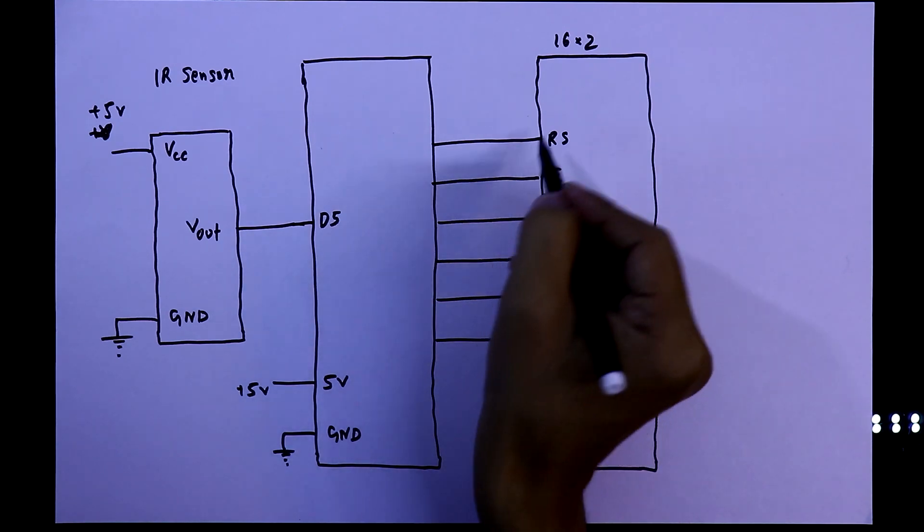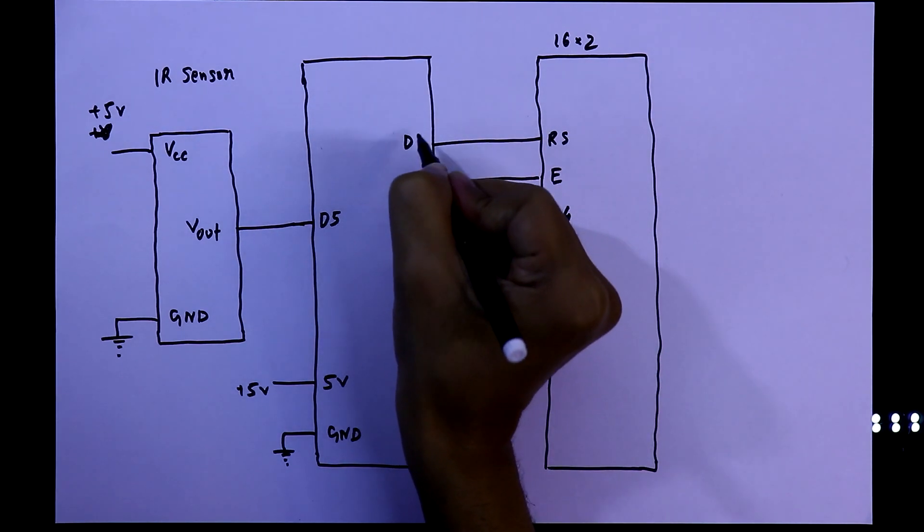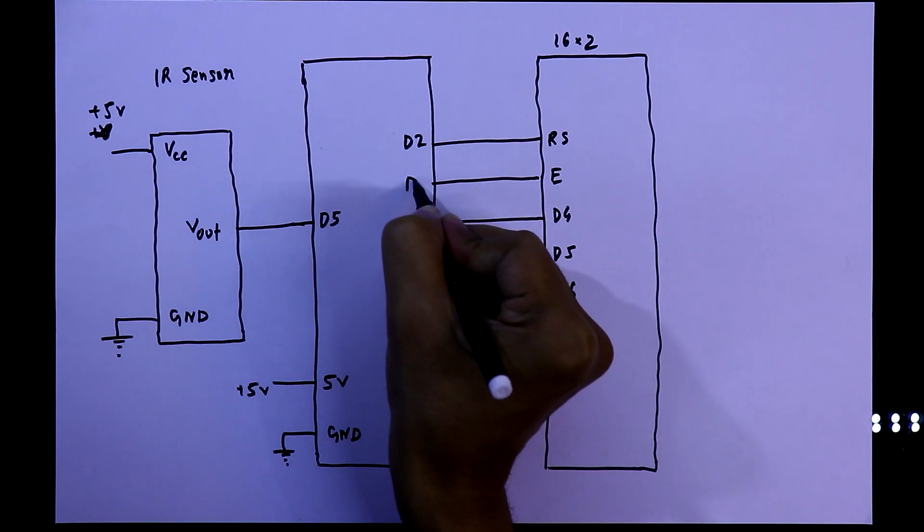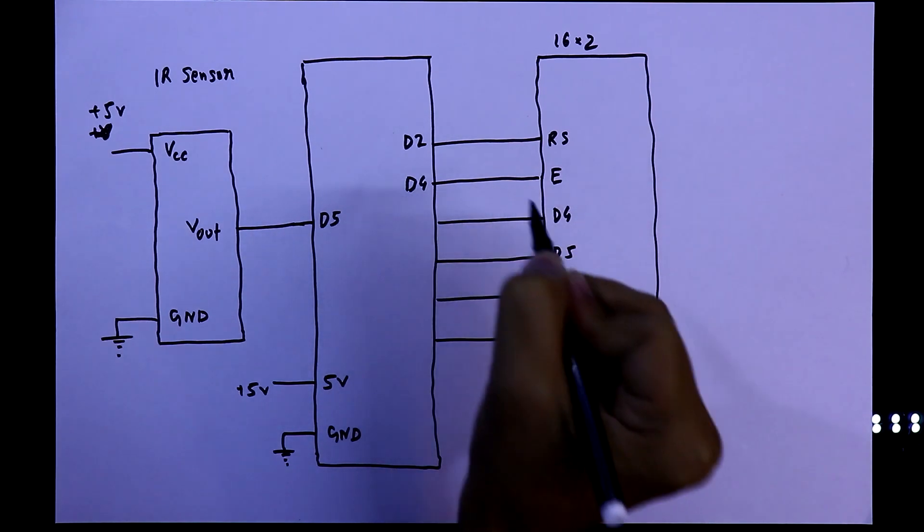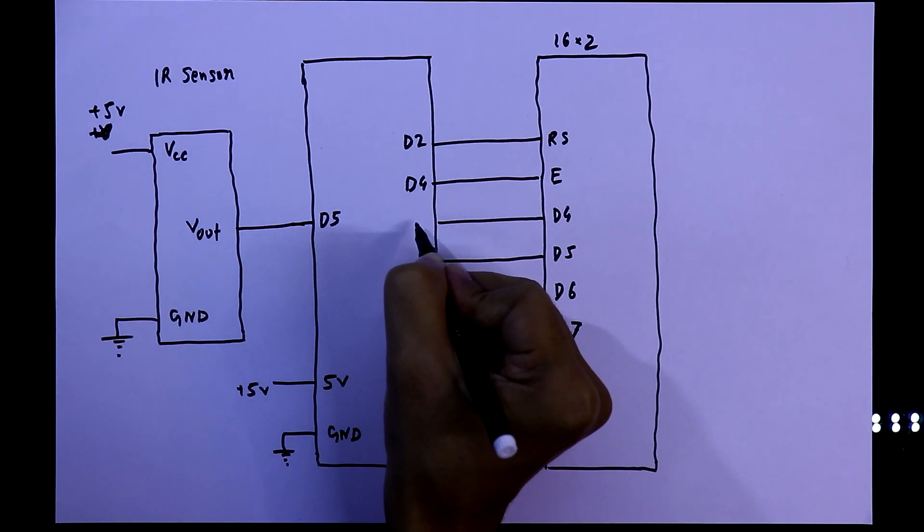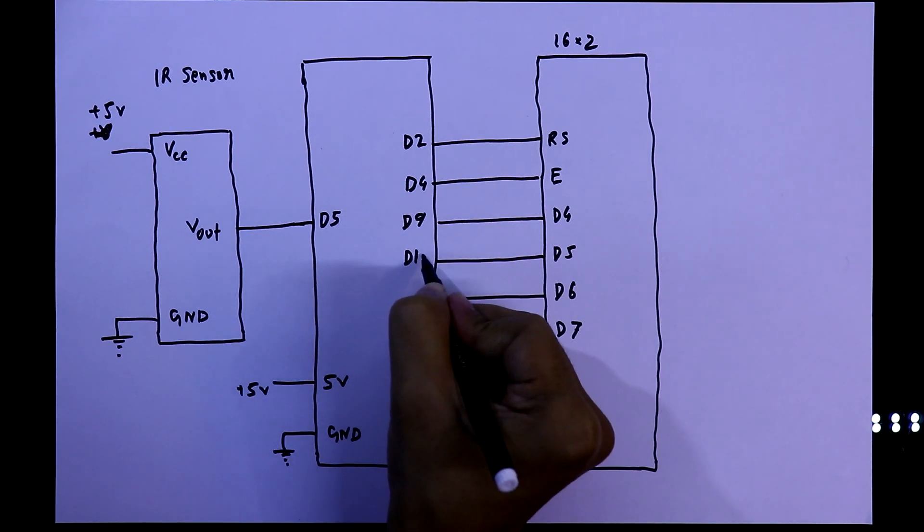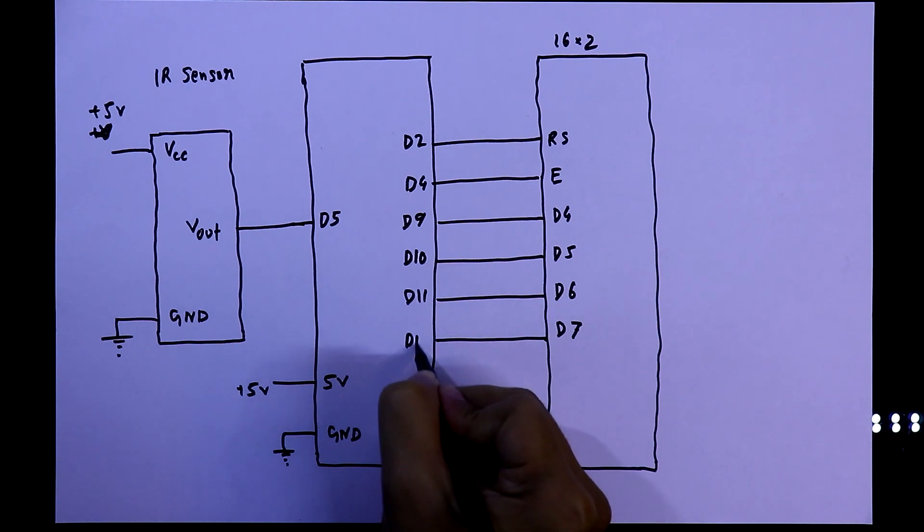According to my program, RS is connected to D2, Enable pin is connected to D4. The D4 pin of the display is connected to D9 of the Arduino, then it is D10, D11, and D12.